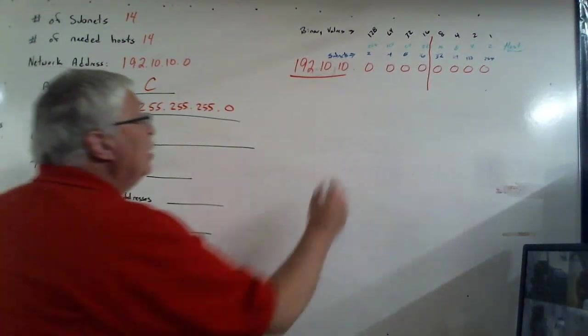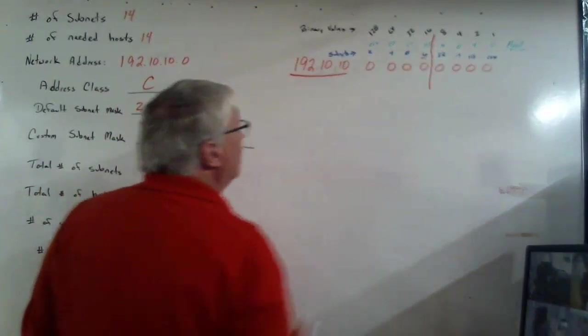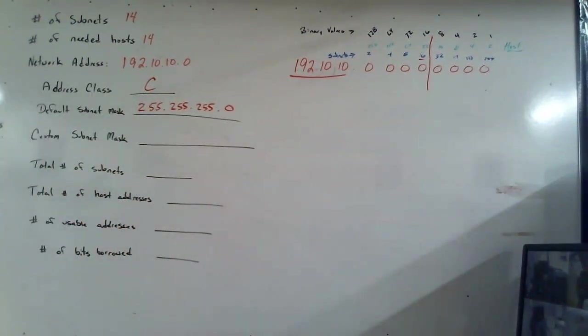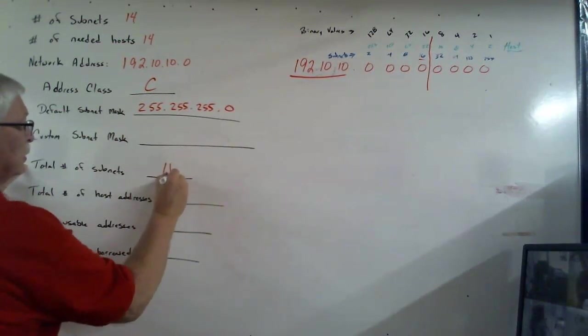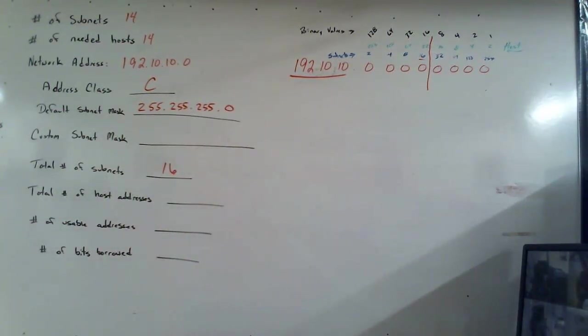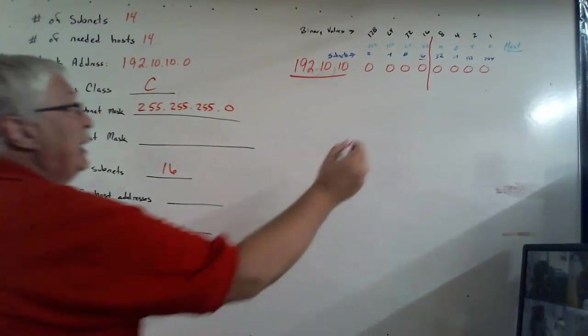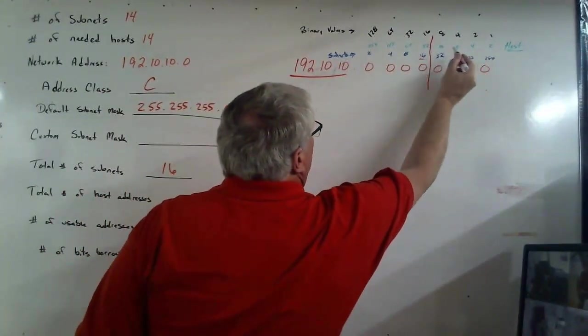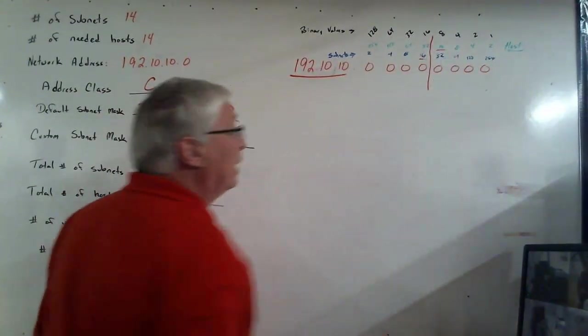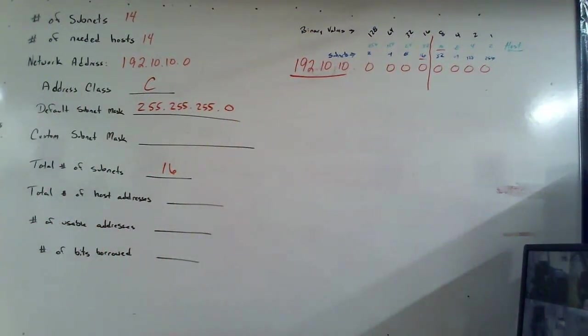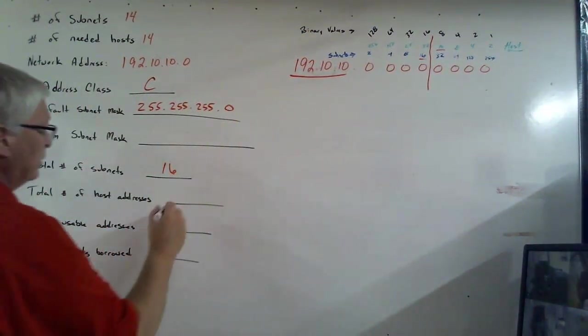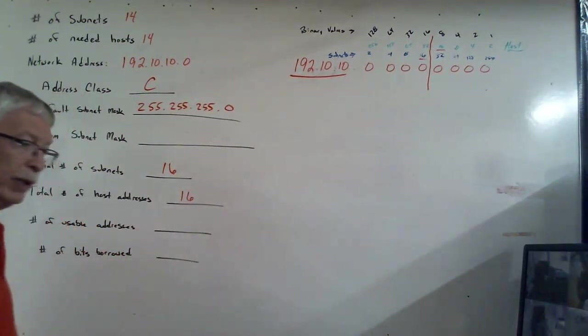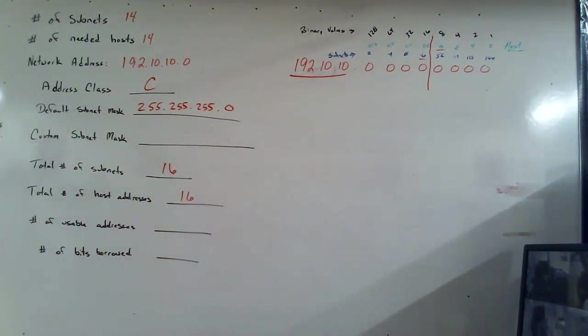So, we know subnets. There are 16 of them. So we can fill that in for the total number of subnets. 16. If we look at the host side in green, two, four, eight, the number before the line is 16. Just so happens it's the same as the number of subnets. Kind of a freak thing. It doesn't happen this way that often.